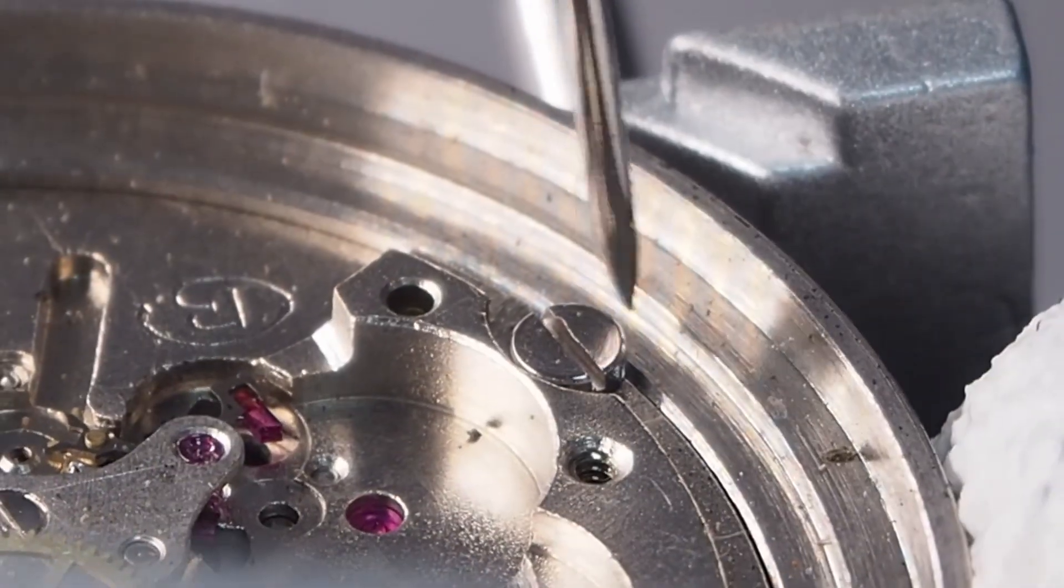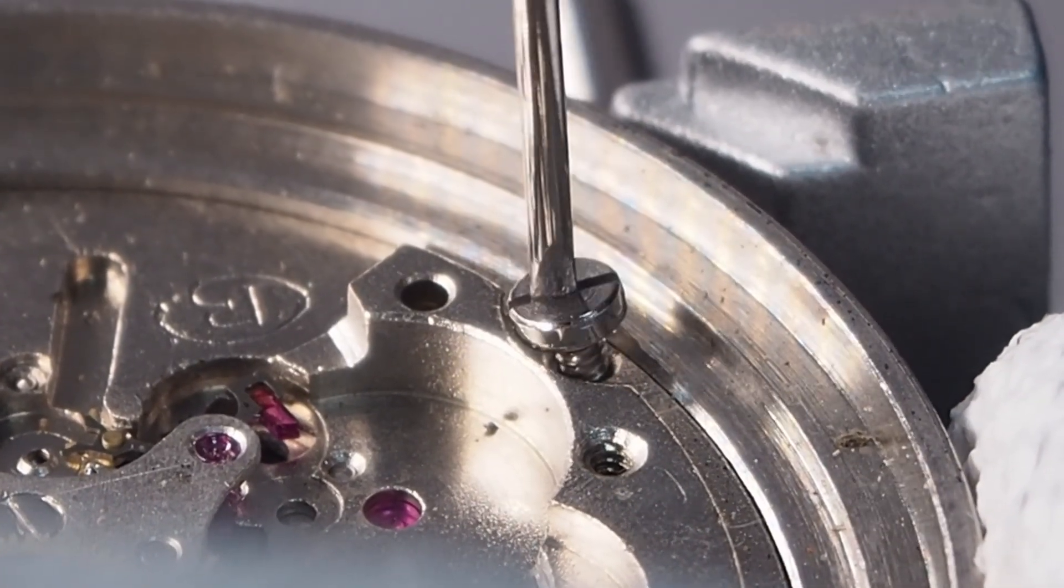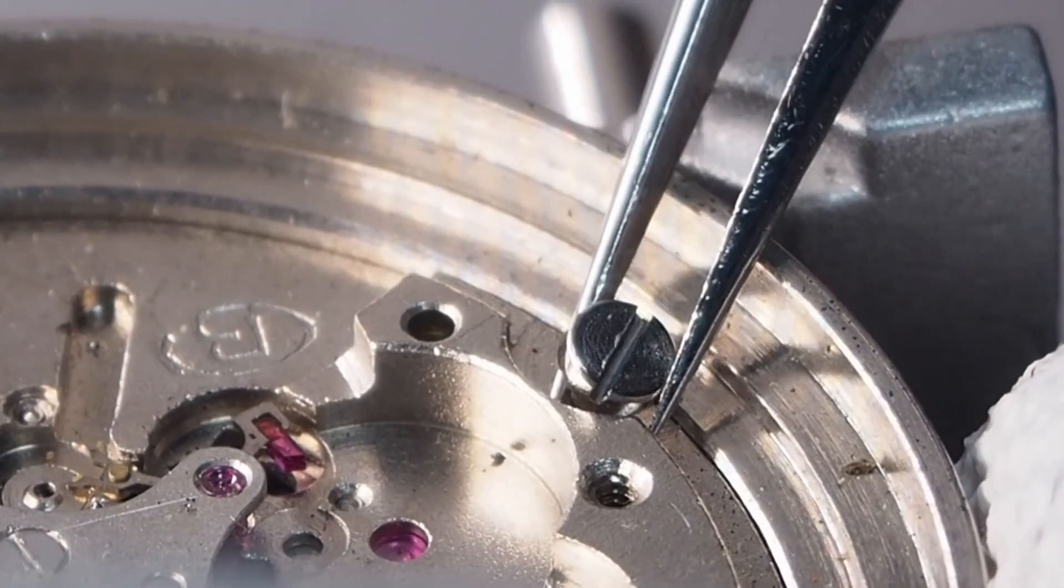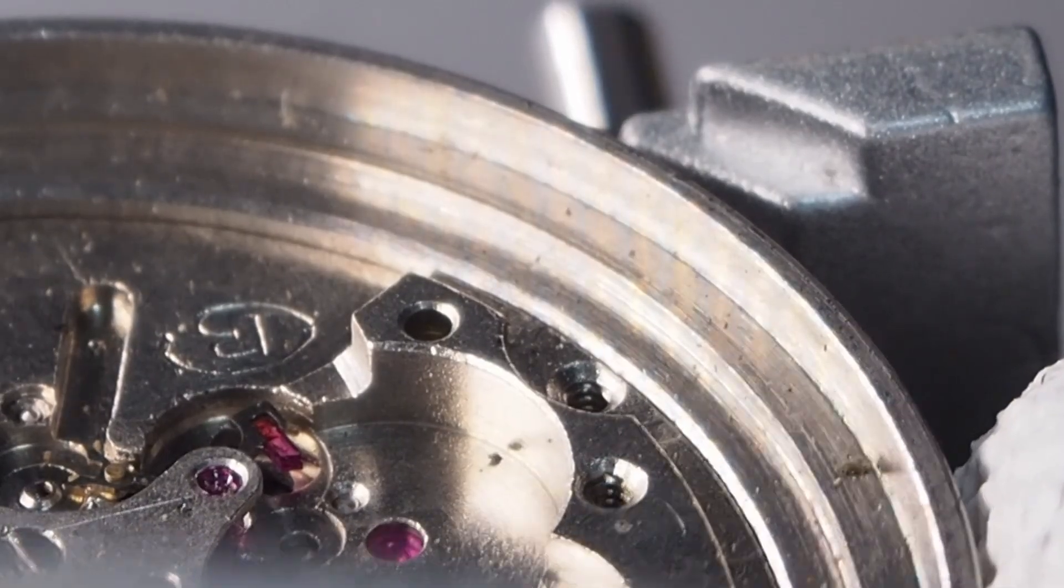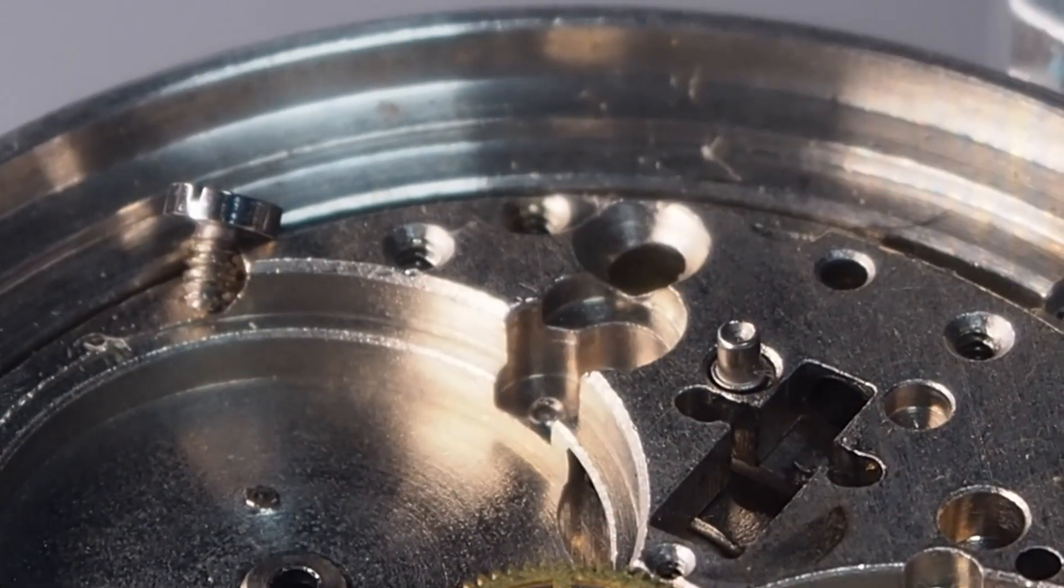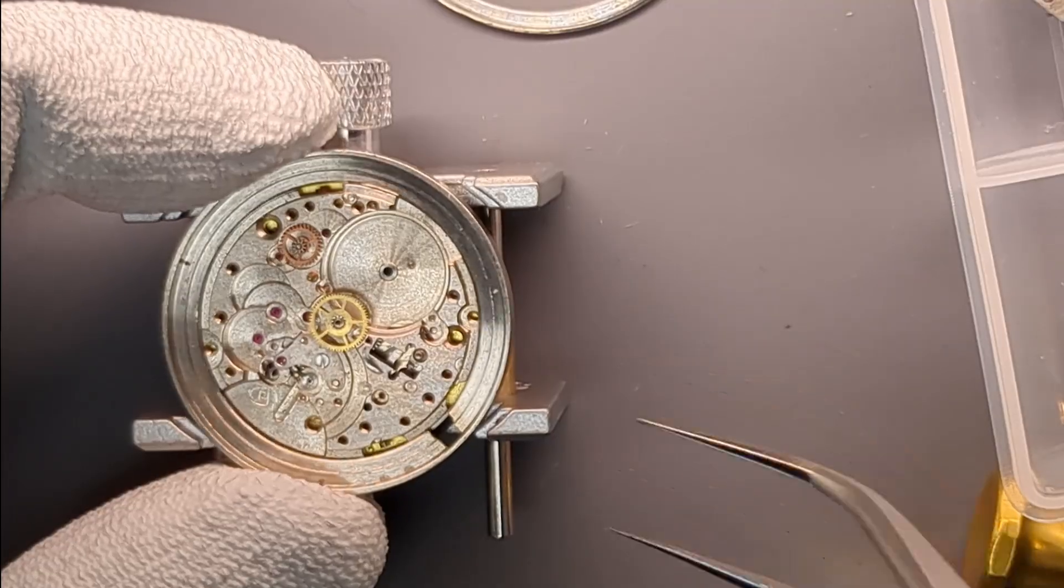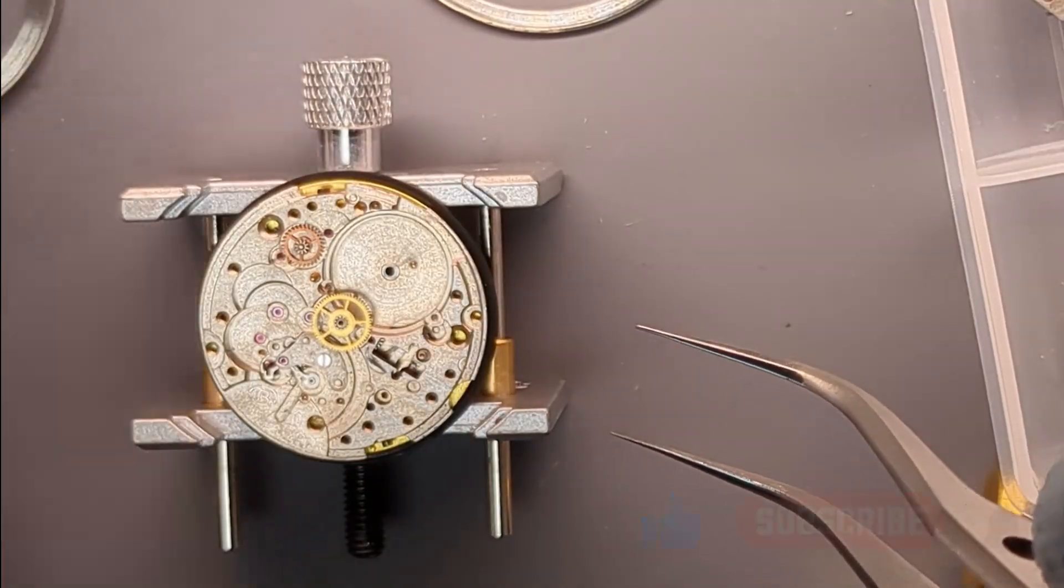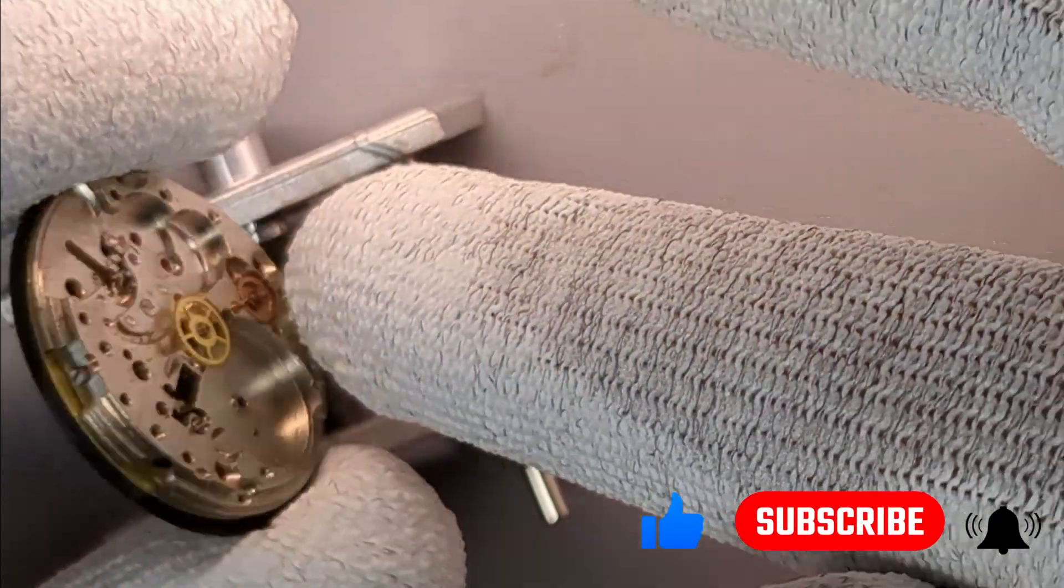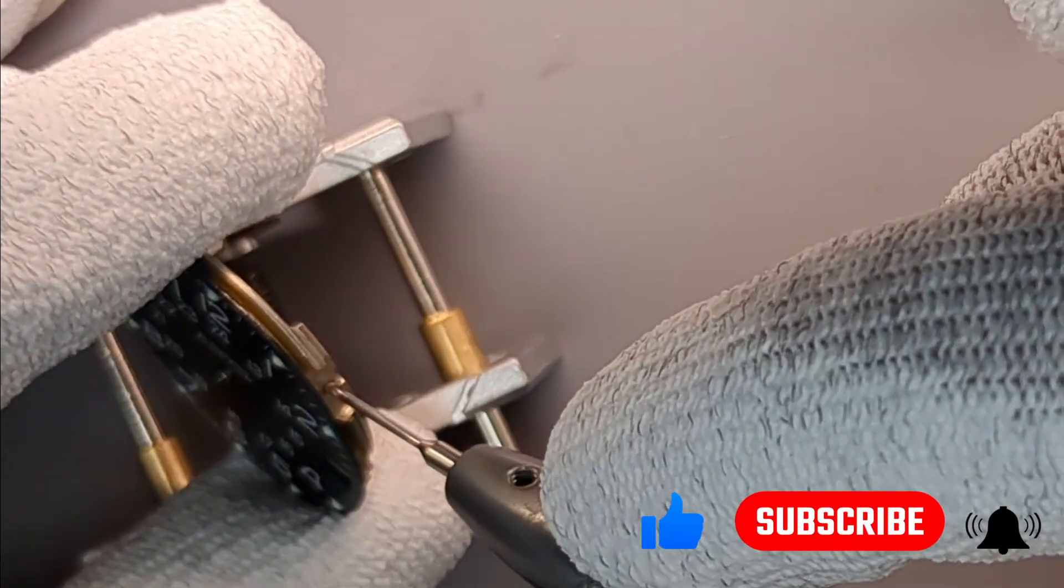Now, I need to remove the dial. To remove the dial, I first need to take out the stainless steel movement retaining ring, which is held in place by two screws. Now, I will release two tiny screws that hold the dial. And I can gently remove the dial from the movement.